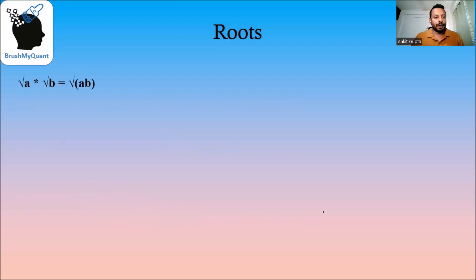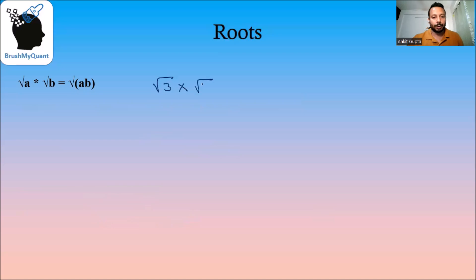√a multiplied by √b is equal to √(a × b). For example, √3 multiplied by √4 will be equal to √(3 × 4), which is √12.